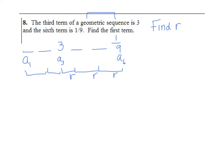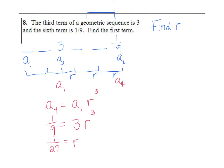To find r, treat a sub 3 as a sub 1 and a sub 6 as a sub 4. Use the formula: a sub 4 equals a sub 1 times r to the 3. So 1/9 equals 3 times r cubed. Divide both sides by 3: 1/27 equals r cubed. Take the cube root: r equals 1/3.